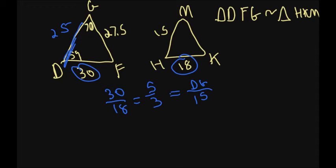And then let's find MK. So I still have that same ratio, 5 over 3, equals now I know the top number, which is 27 and a half, over MK because that's what I'm looking for.